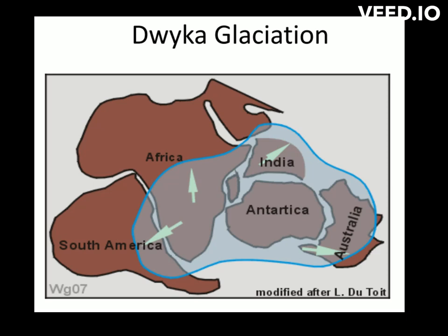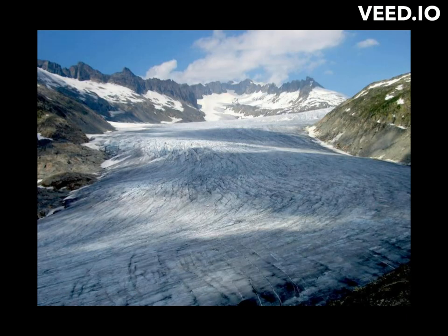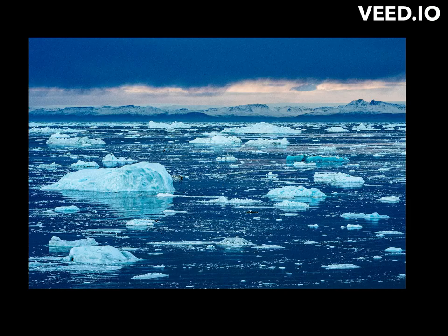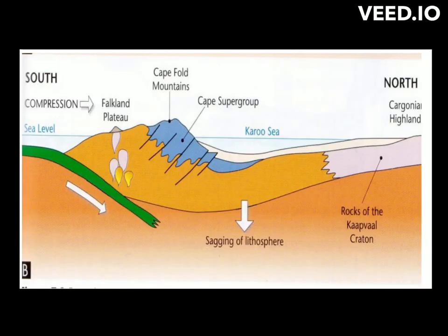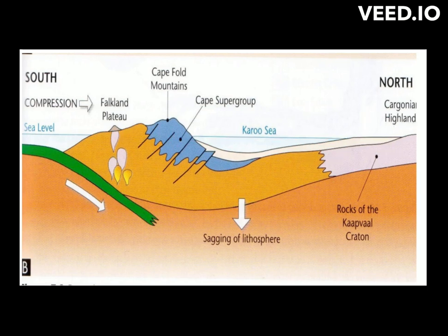This was during Dwyka times, wherein Gondwana was at the south pole, experiencing glaciation because the south pole is characterized by extreme coldness. Due to the movement of plates, Gondwana was drifting towards the north, resulting in the melting of the ice. The water therefore filled and enlarged the Karoo Sea, which was formed as part of the crust together with the Cape Supergroup rocks were being pushed towards each other, colliding head-on with the oceanic crust.